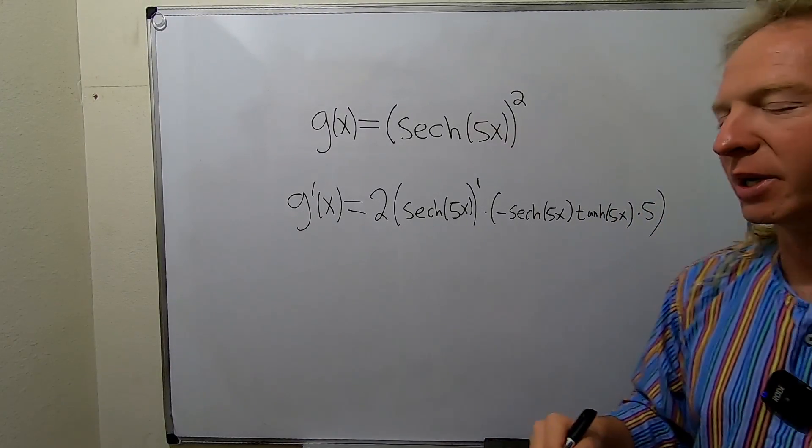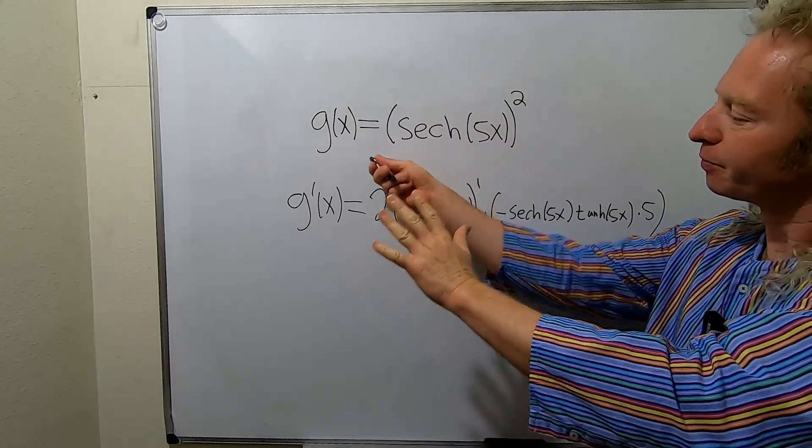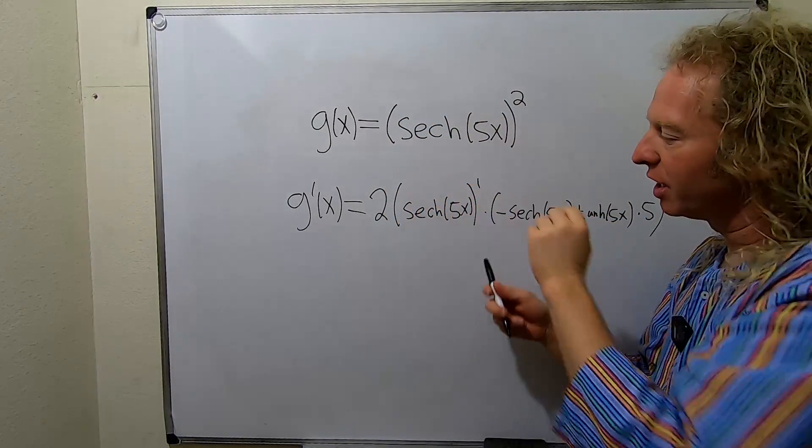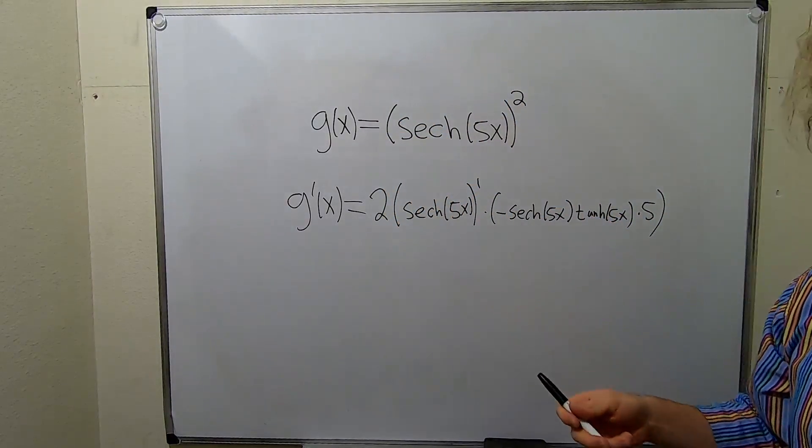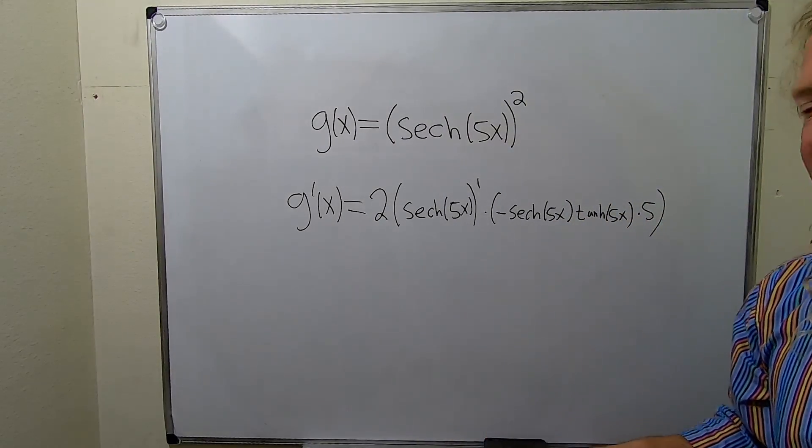Let me go over that one more time. So you have something to a power. So you bring down the 2, leave the inside untouched. Then you have to multiply by the derivative of the inside. Now if it was just secant, the derivative of secant is secant tangent.